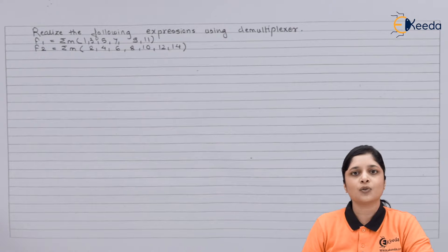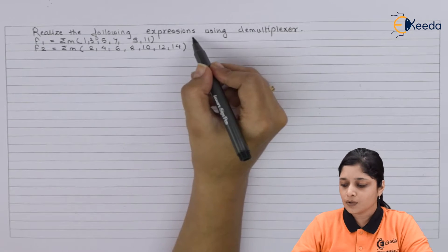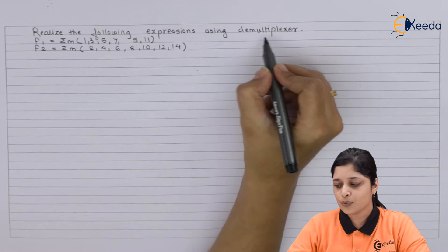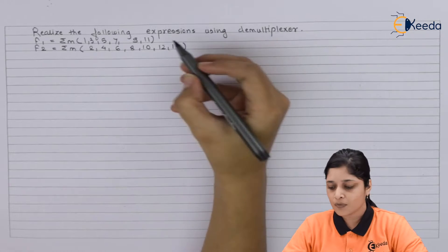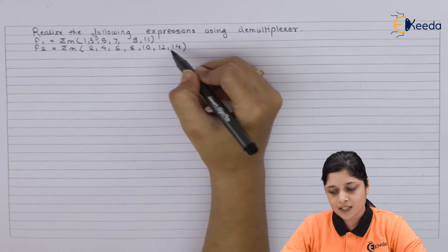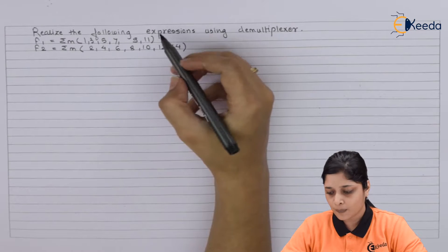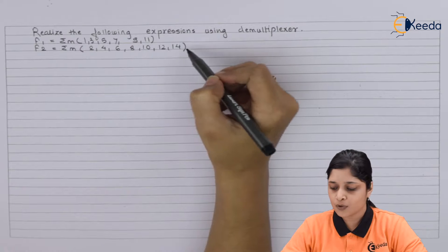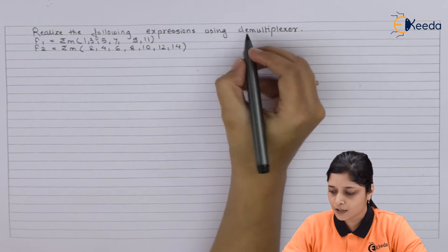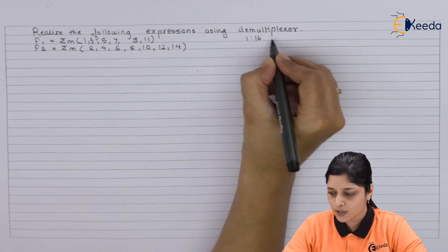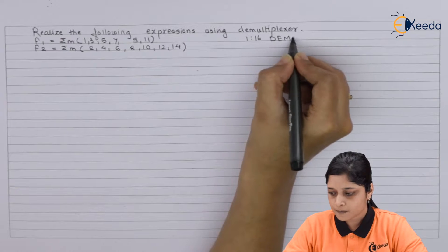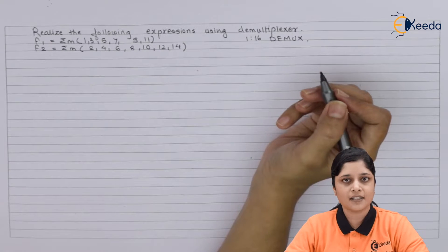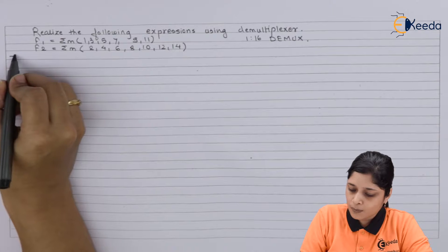This is your numerical. According to the numerical, you have to use the demultiplexer. We will focus on the minterms present in the given expressions. 11 and 14 are the last terms, so according to these last terms we will use here 1 to 16 DEMUX - 1 input and 16 outputs.